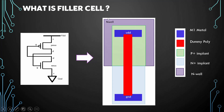This is how the filler cell looks like. It has a PMOS and NMOS where the gate of NMOS is connected to the drain of PMOS, and the gate of PMOS is connected to the drain of NMOS. This is how the layout of a filler cell looks like — the red color one is the poly, and this is VDD and ground.